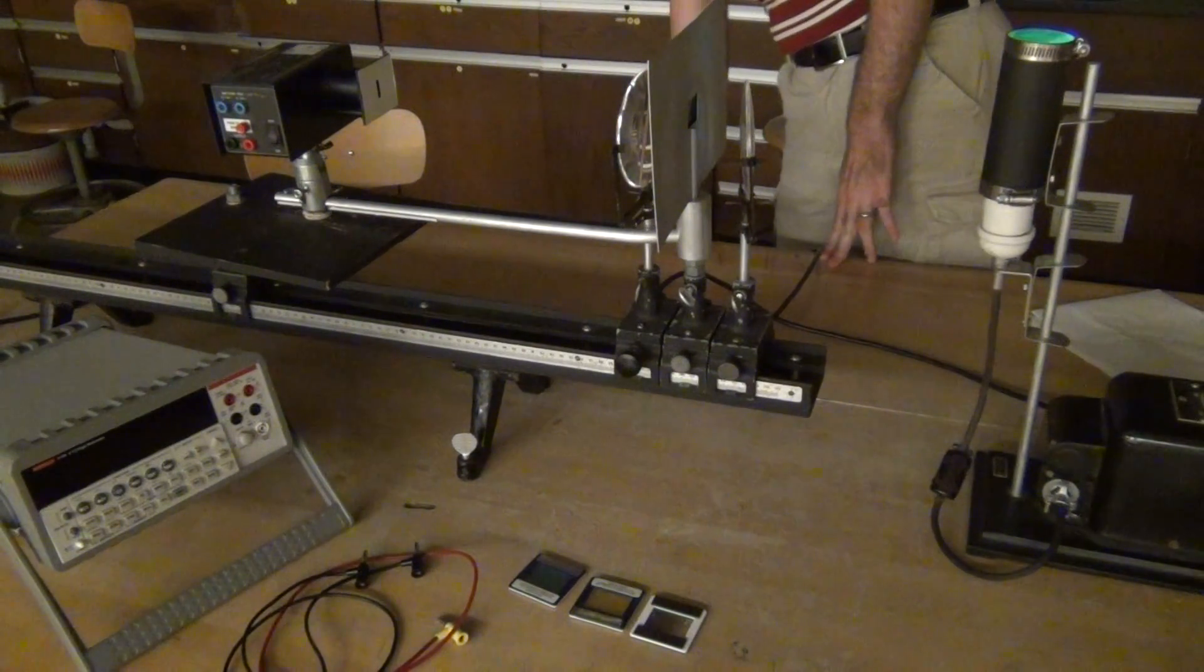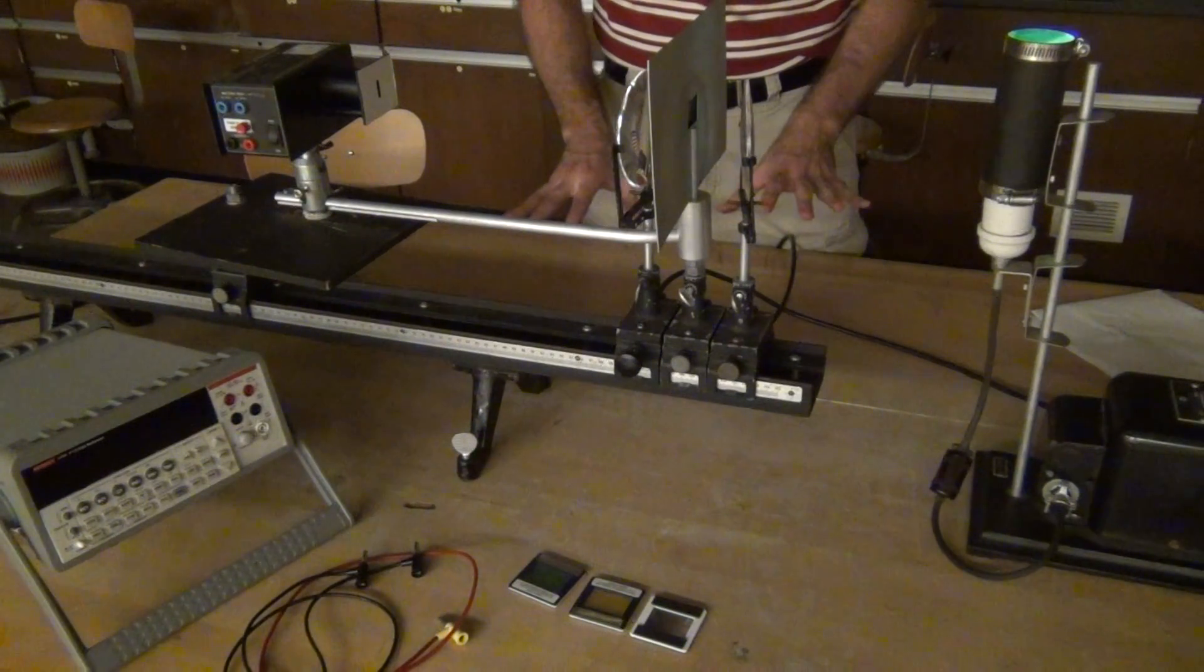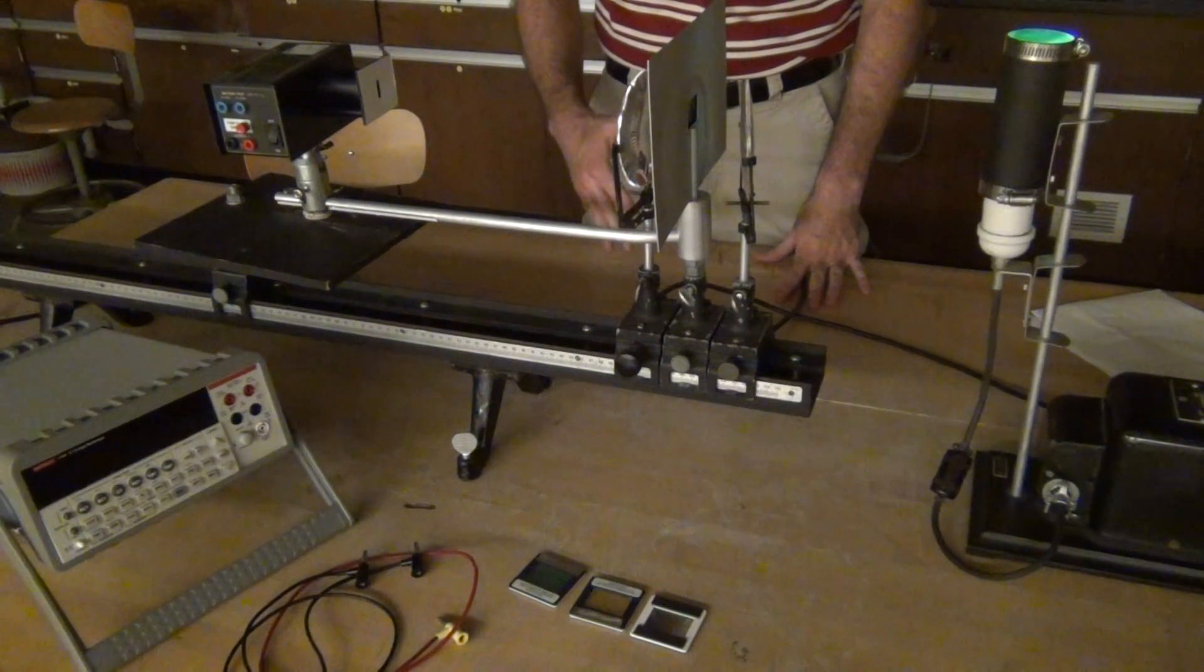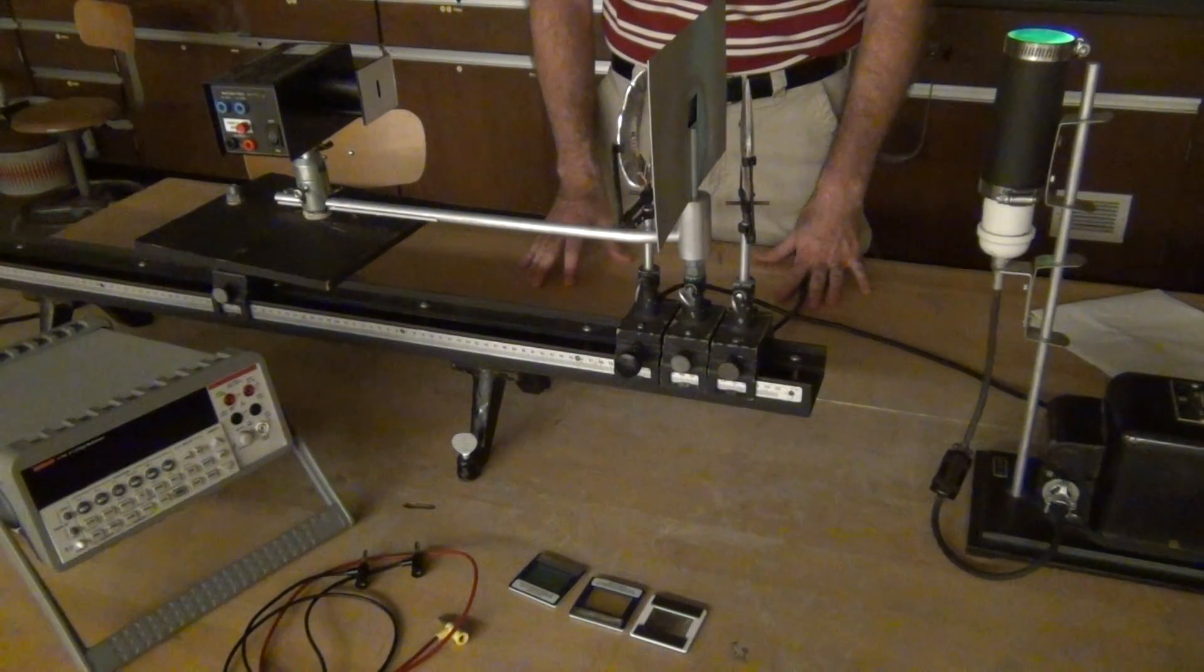Plug the mercury lamp into the silver outlet. Once it's plugged in, leave it plugged in until the very end of your experiment when you have all your data or it won't turn back on until it's completely cooled off.